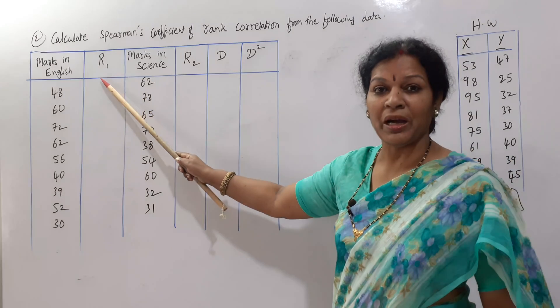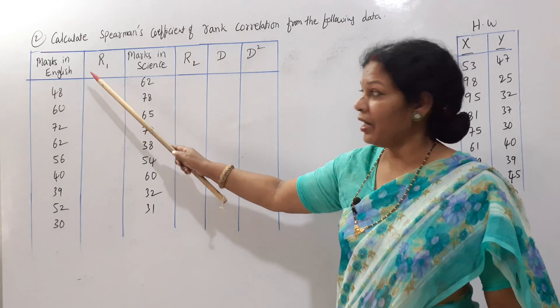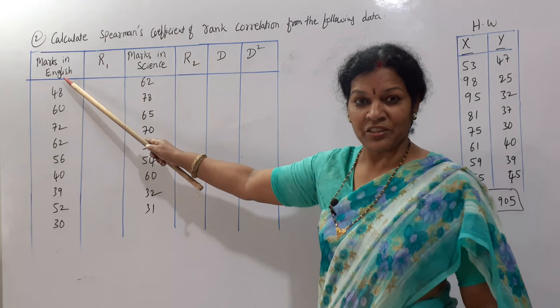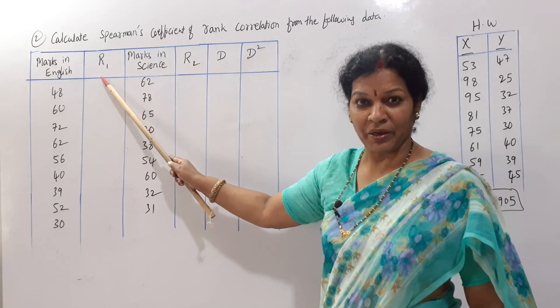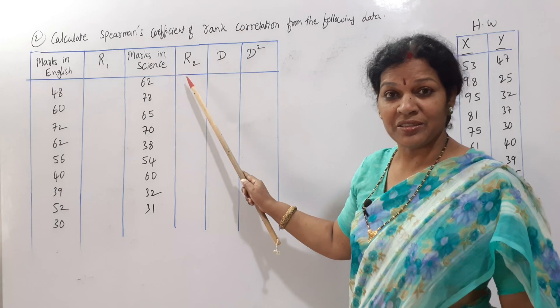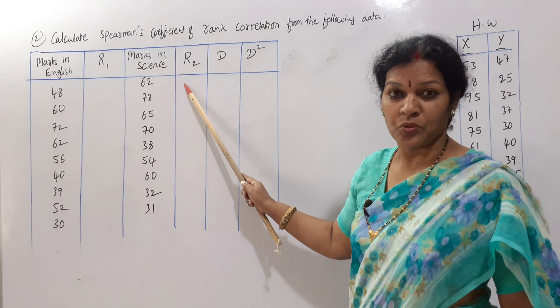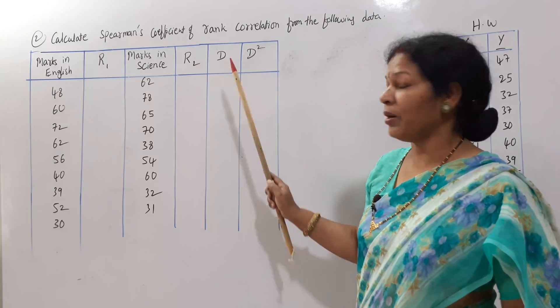We have to give the rank. So I have provided one column R1 for marks in English. For this I am giving rank one. And marks in Science, for this another rank R2.